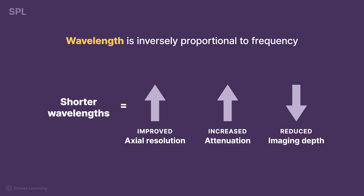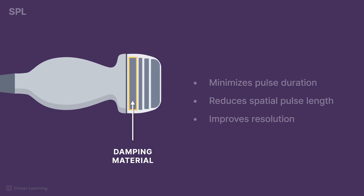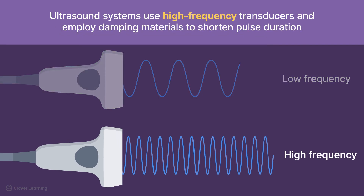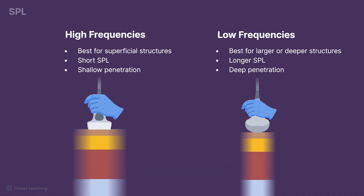As a result, there is a trade-off between resolution and imaging depth, requiring careful selection of transducer frequency based on the clinical application. The damping material within the transducer minimizes pulse duration, which reduces spatial pulse length and improves resolution. To optimize axial resolution, ultrasound systems use high-frequency transducers and employ damping materials to shorten pulse duration. This optimization is particularly beneficial when imaging superficial structures and small organs that require fine detail. Remember, the need for deep penetration is minimal for superficial structures, so higher-frequency transducers with shorter spatial pulse length are suitable for these images.